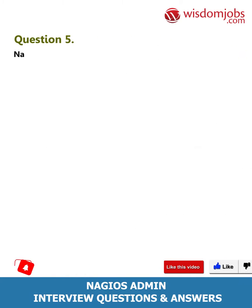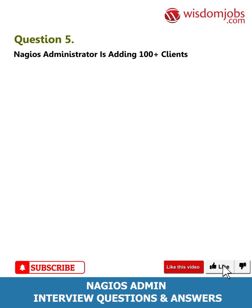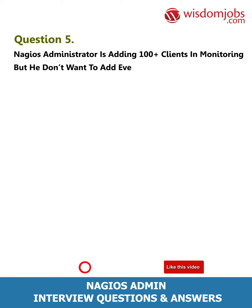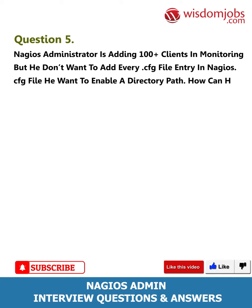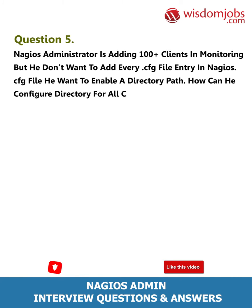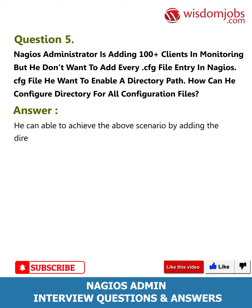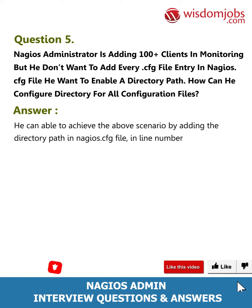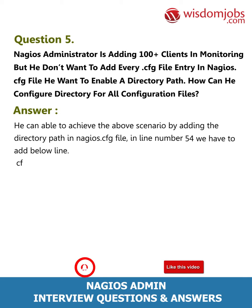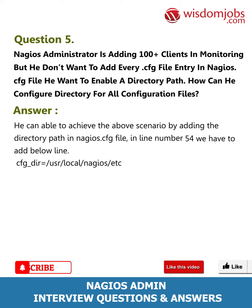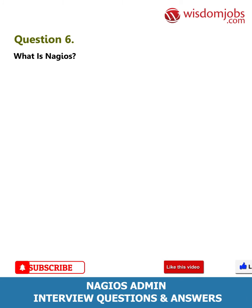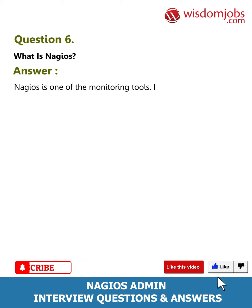Question 5: A Nagios administrator is adding 100+ clients in monitoring but doesn't want to add every cfg file entry in nagios.cfg. He wants to enable a directory path. How can he configure a directory for all configuration files? Answer: He can achieve the above scenario by adding the directory path in nagios.cfg. In line number 54, add the following line: cfg_dir=/usr/local/nagios/etc/objects/monitor.